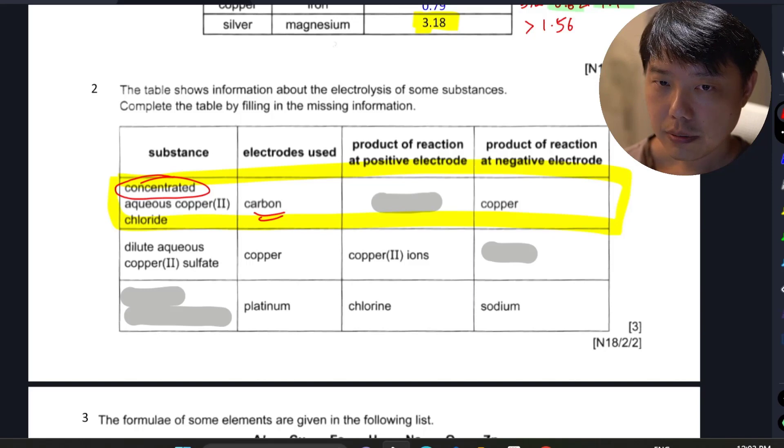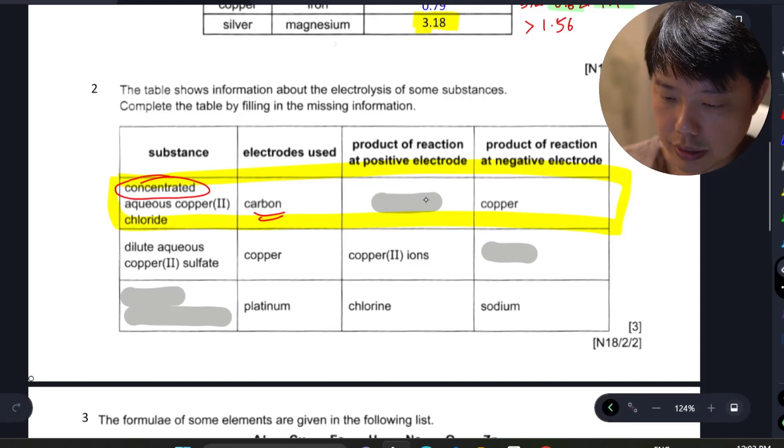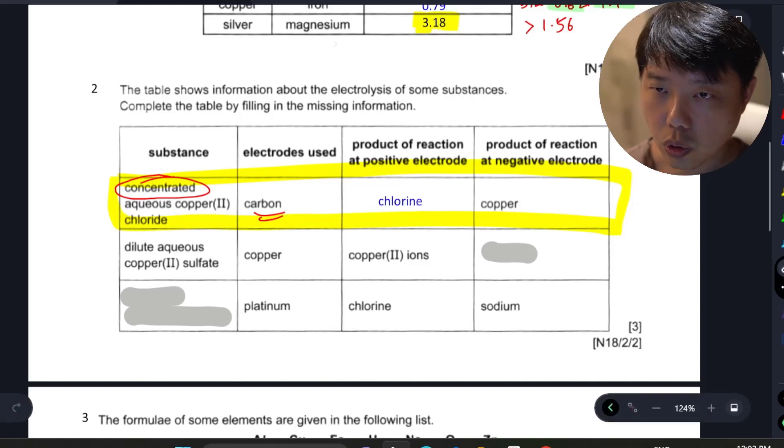Because it's concentrated, chloride is going to be preferentially discharged compared to the OH-. So for this first question, that's all they're asking. Chlorine will be discharged at the positive anode.